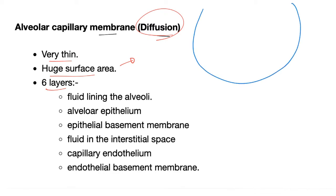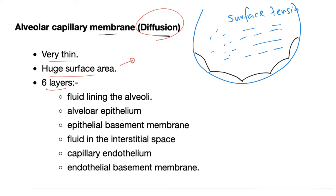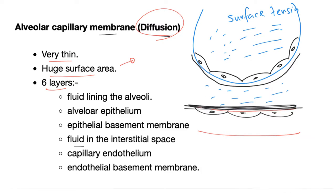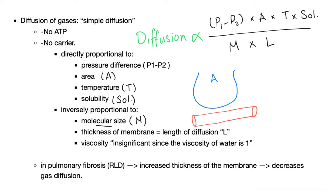There is fluid in the alveoli, creating surface tension. Then alveolar epithelium: type 1 pneumocytes, which are squamous, allowing gas exchange because the cell needs to be very thin. Then the epithelial basement membrane, fluid in the interstitial space, capillary endothelium, and the endothelial basement membrane. Diffusion of gas — oxygen in, CO₂ out — requires no ATP and no carrier; it's simple diffusion. If it required ATP, you'd be dead from the energy cost of breathing all day.